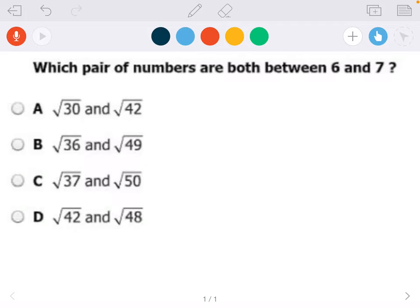Which pair of numbers are both between 6 and 7? So we have a bunch of square roots here, and we need to figure out which pair are both between positive 6 and positive 7.